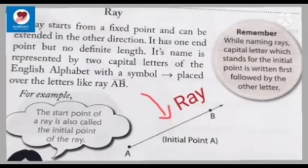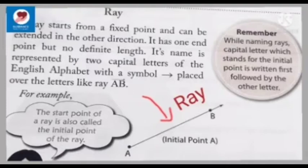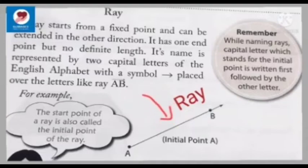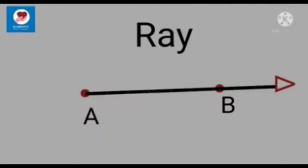Now we are going to study about a ray. A ray starts from a fixed point and can be extended in the other direction. It has one endpoint but no definite length. Its name is represented by two capital letters with a symbol placed over them, like ray AB. The starting point of a ray is also called the initial point. In this example, the initial point of the ray is A.